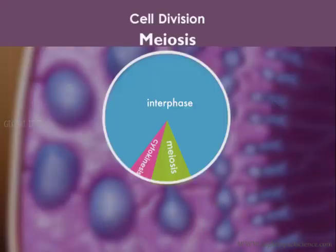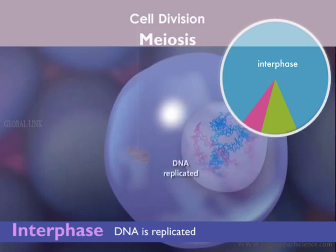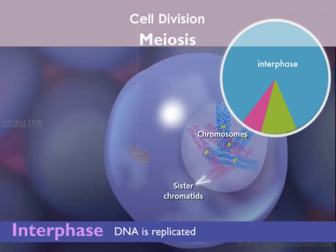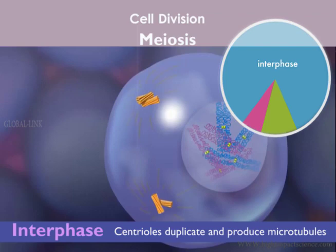Just like mitosis, meiosis begins after the cell has undergone the interphase stage. During interphase, the DNA is replicated, producing two copies of each chromosome called sister chromatids. The paired centrioles duplicate and begin extending microtubules.